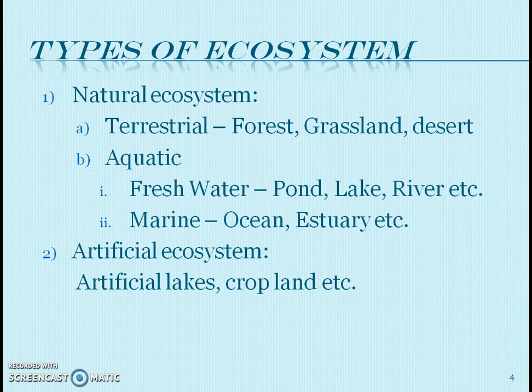There are different types of ecosystems. The first one is the natural ecosystem. This natural ecosystem is classified as terrestrial ecosystem, in which we can consider forest, grassland, and desert ecosystems. The next type is the aquatic ecosystem, which can be classified as freshwater ecosystem and marine ecosystem.